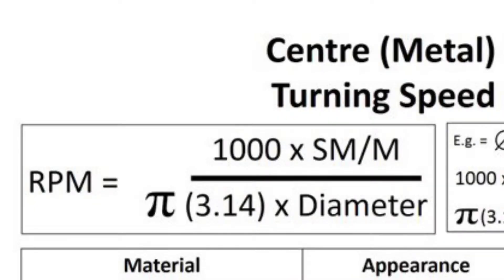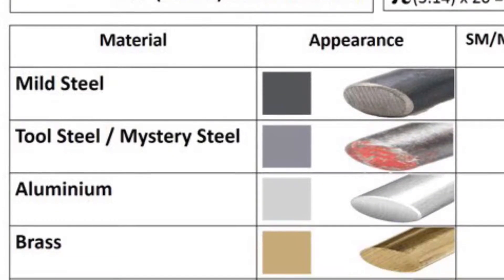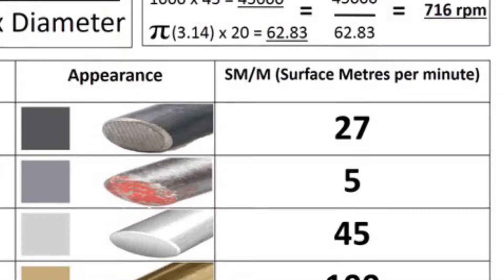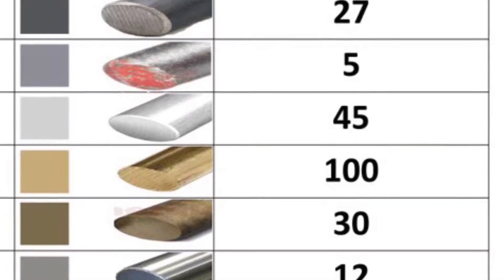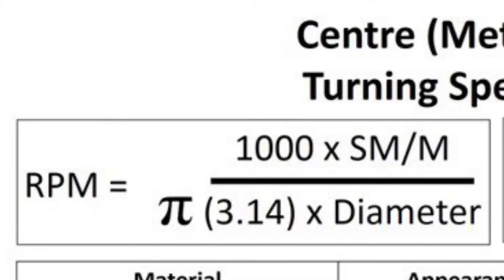The three-jaw chuck's turning speed, measured in revolutions per minute, can be calculated by multiplying any material's surface metres per minute cutting value by 1000 and dividing that by the value of pi, 3.14, times the material's diameter.